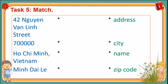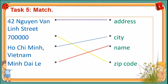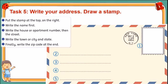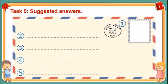Well done, students. Now Task 5 — match. You have 1 minute to do this task. Let's correct: 42 Nguyễn Văn Lên Street — address; 70000 — zip code; Ho Chi Minh, Vietnam — city; Minh Đại Lê — name. Now Task 6 — write your address and draw a stamp. Here is a sample for you.